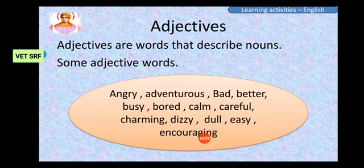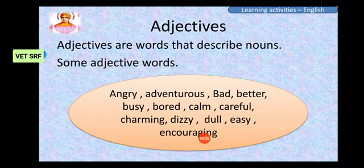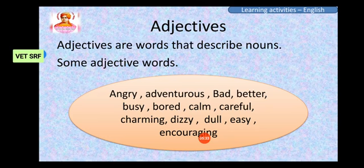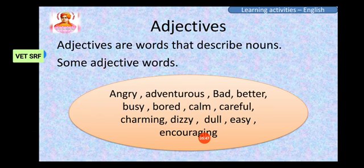Some adjective words for your knowledge: Angry — 'He is an angry person.' Adventurous — 'The trip was so adventurous.' Bad — 'He is a bad boy.' Better — 'I said that movie is better than this movie.' Busy — 'I am so busy.' Like that, you can use these adjective words to give more explanation about our nouns.